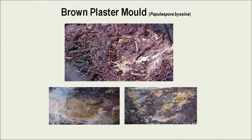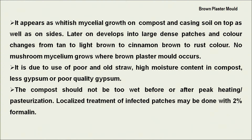Brown plaster mold is very common especially in seasonal mushroom farms. It appears initially as white mycelium growth on the compost and in the casing. Later, these spots merge to form large-sized patches, and their color changes to cinnamon to rust. Wherever this mold's mycelium is present, no mushroom mycelium grows. Its main causes are use of old or rain-wetted straw, high moisture content in compost, or insufficient or poor-quality gypsum.